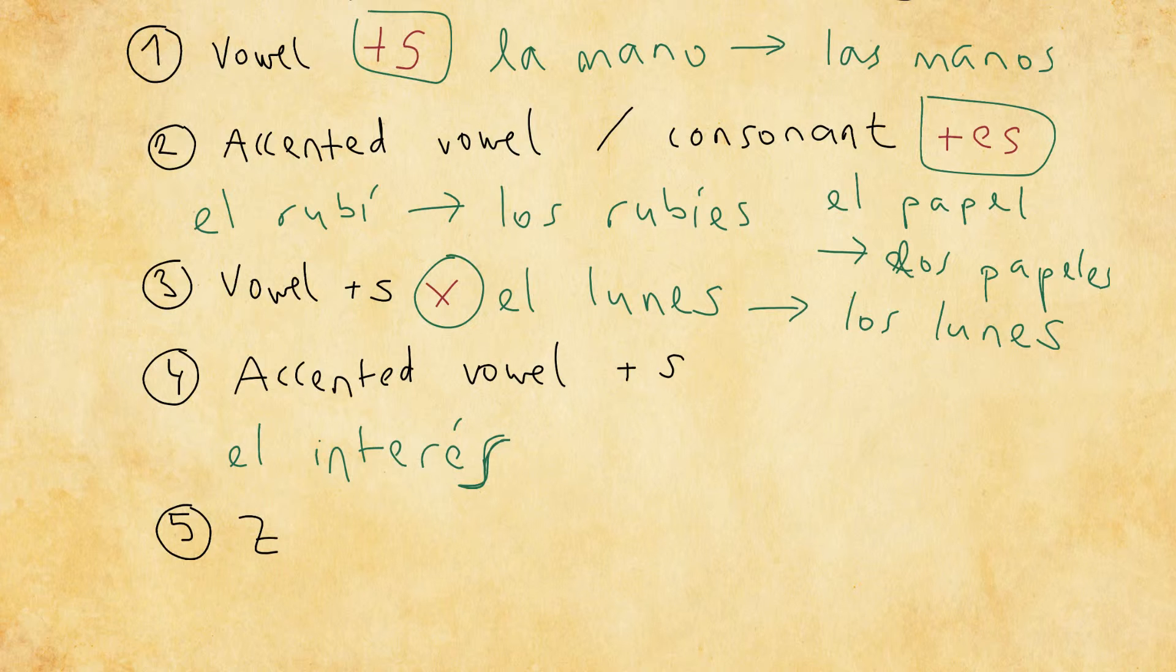And the way we form plural for these kinds of words that have an accented vowel and an s at the end, is that we add es. So los intereses. So plus es again. And you may have noticed an interesting thing that happened here, is that with the plural form, I do not write the accent. I do not write the tilde above the e anymore.